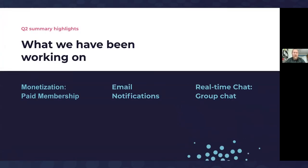For Q2, one highlight was definitely the monetization work: implementing a Stripe connection and working on paid membership. The first part was allowing an overall payment structure within Open Social, connecting to Stripe, being able to connect custom roles to it, and defining on different levels who can access what and what price tag is attached. The paid membership is a great first step, and I know a few clients are already using that use case. The next step will be ticketing, which I'll explain later.